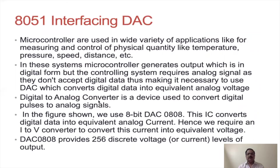The ADC is used at the input side of the microcontroller. Once the microcontroller processes that input and produces a desired output in digital form, it must be converted back into analog form for the external world — and that work is done by the D-to-A converter. The DAC takes the digital input from the microcontroller, converts it to the equivalent analog signal, and sends it to the external world. The DAC 0808 is an 8-bit D-to-A converter.